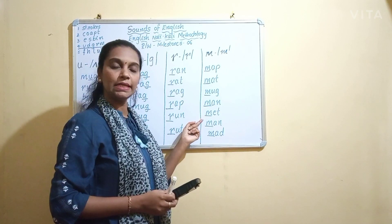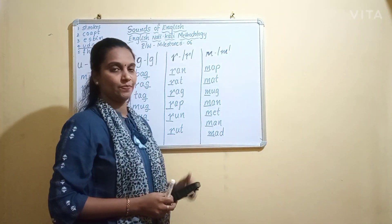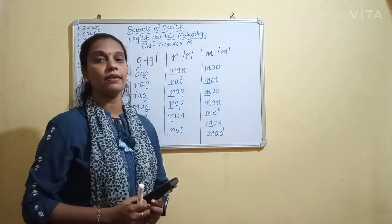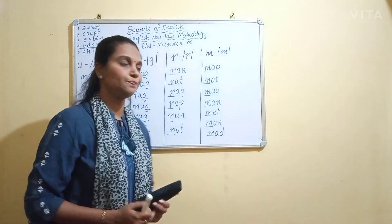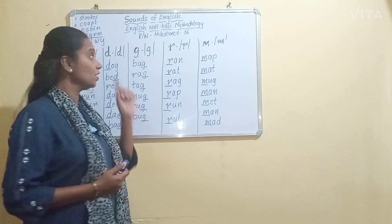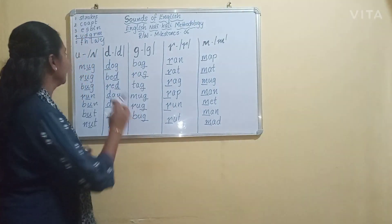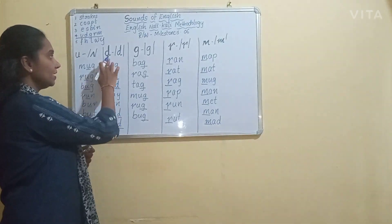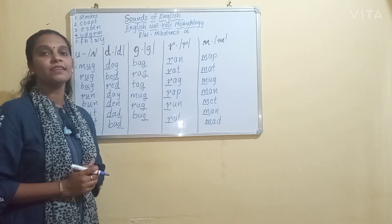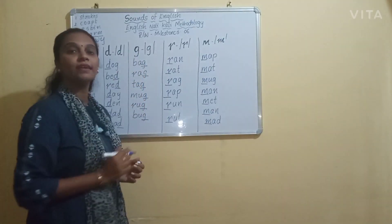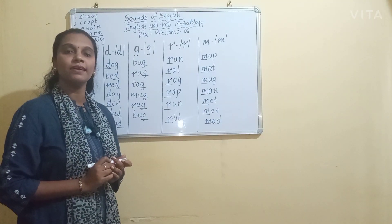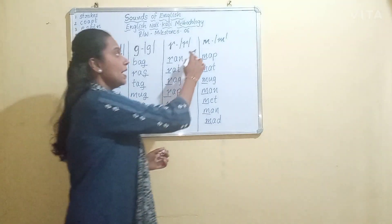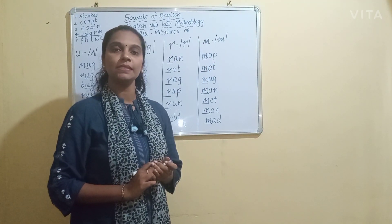Man, met, and man. Yes dear teachers, these are the sounds of the letters U, D, G, R, M. Let us revise the sounds once again. U says A, D says D, R says R, M says M.